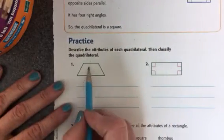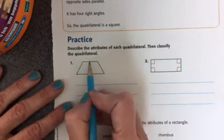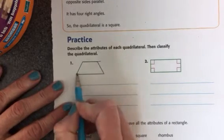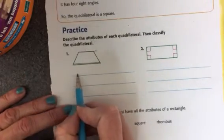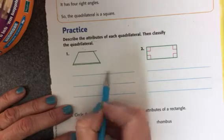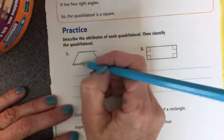So you're going to do the same thing on this one. You're going to write down the attributes. Well, one attribute that I can see is there are opposite parallel lines. So you'll write down opposite parallel lines, but you only have one set.